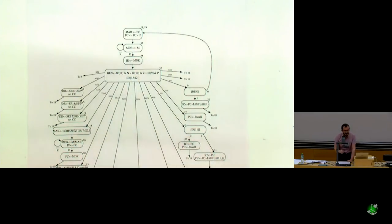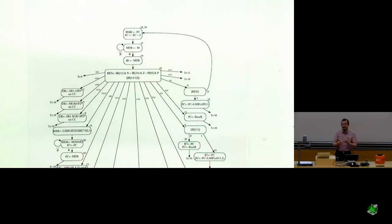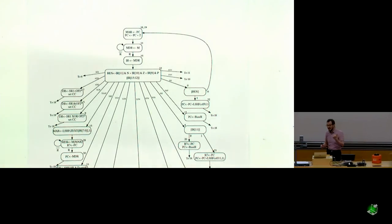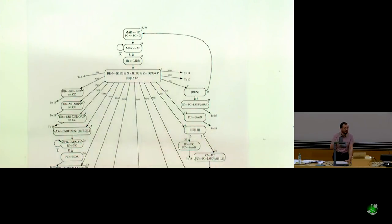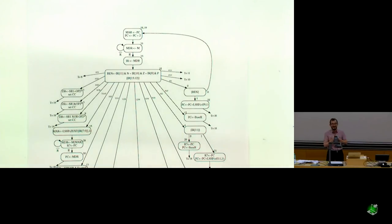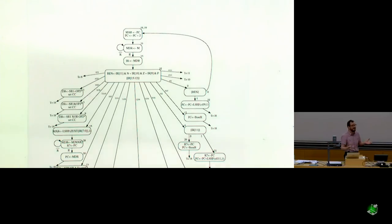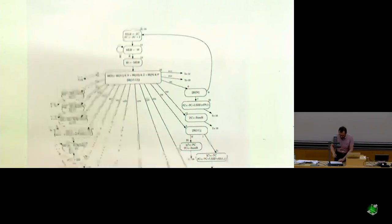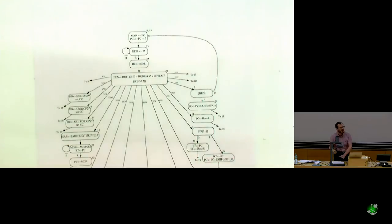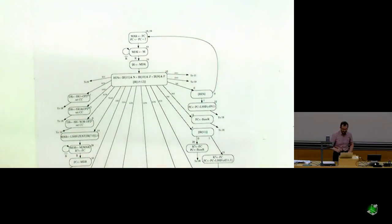There are two principles here. First, the critical path design principle: generate the control signal for whether the branch is taken in the previous cycle, not the cycle it's needed. Second, speculative execution: do things early before you know they're needed. This enables faster processing by ensuring control signal generation doesn't become your critical path. If this branch computation were more complex, it could potentially become your critical path — that's why doing it early matters.